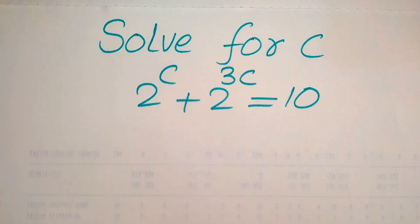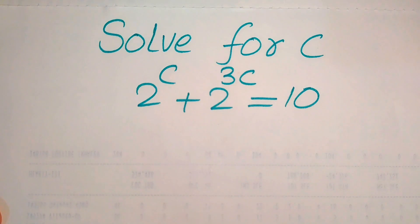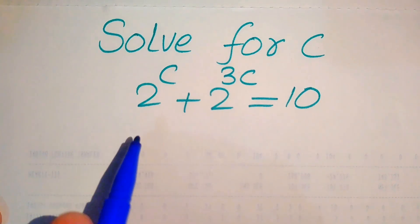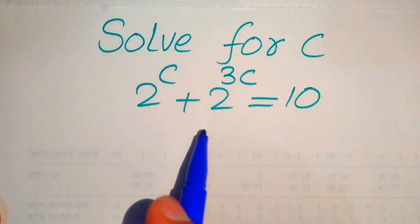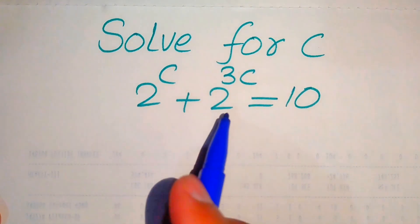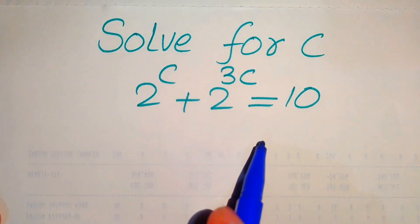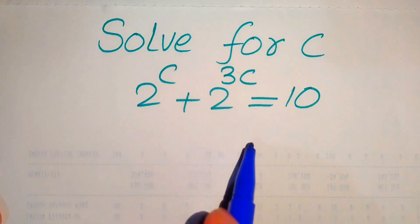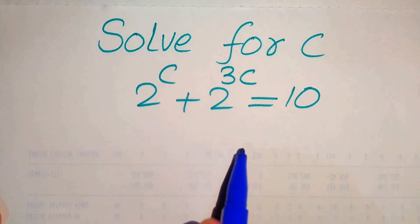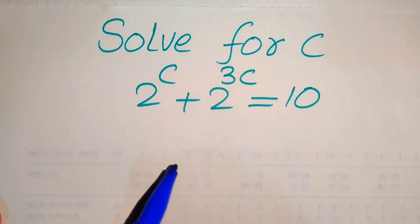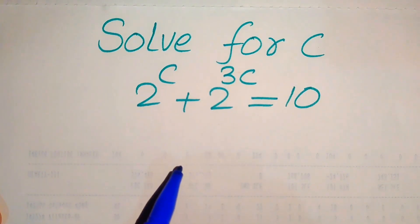Hello everyone. How to solve this problem for the values of c, if we have 2 to the power of c plus 2 to the power of 3c equals 10, and we solve this problem for the values of c.